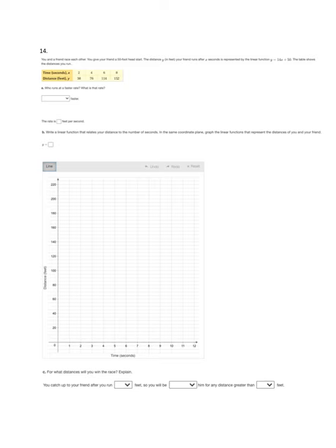The last one I'm going to do here: you and a friend are racing each other. You give your friend a 50-foot head start. The distance in feet that your friend runs after x seconds is represented by this linear function, y equals 14x plus 50. The table shows the distance you run. Your friend runs at 14 feet per second. We can tell that from the slope.